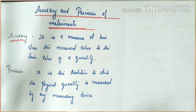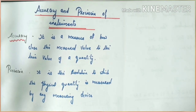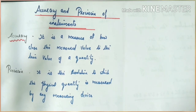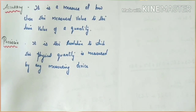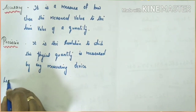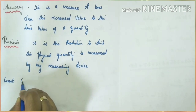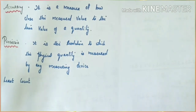What is precision? It is the resolution to which the physical quantity is measured by any measuring device. Accuracy depends on external features like temperature, environmental conditions such as temperature and pressure, the procedure followed, and the technique of measurement. But precision depends on the instrument — specifically the least count of the instrument.